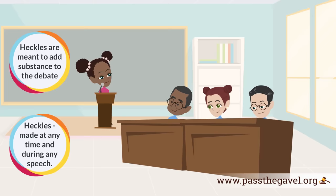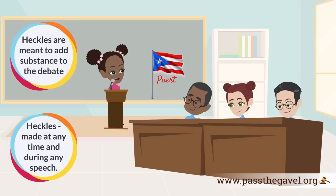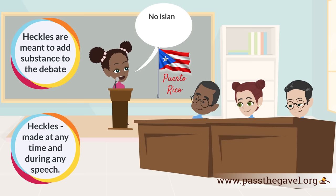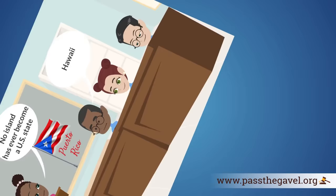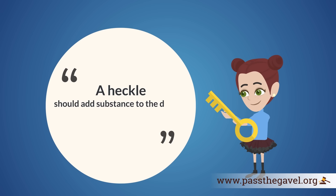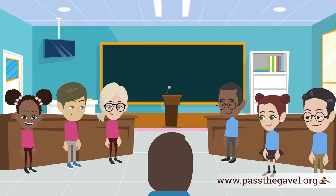Heckles may be made at any time during any speech. For example, if the resolution is that Puerto Rico should be made the 51st state and the opposition speaker argues that no island has ever become a US state, a member of the proposition team could heckle by saying 'Hawaii.' The key is that a heckle should add substance to the debate. These are the middle school parliamentary debate rules in a nutshell. When the debate is over, make sure you thank your judge.